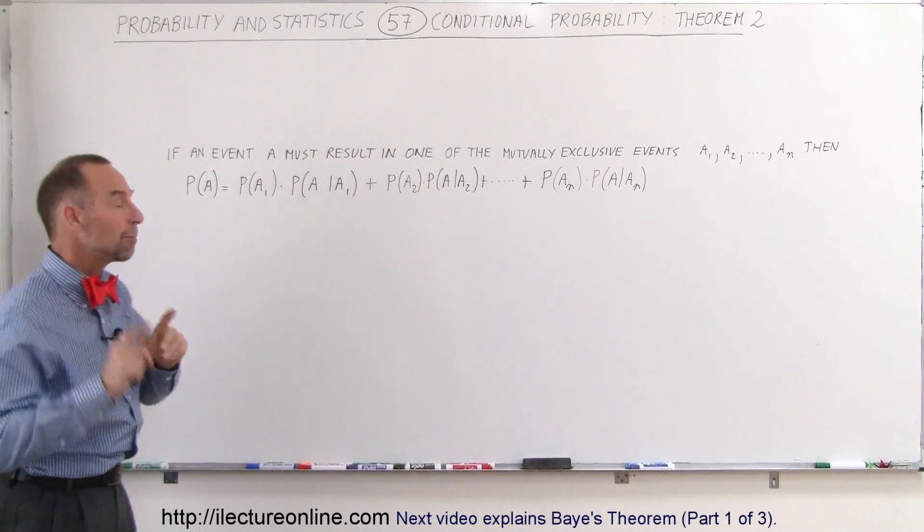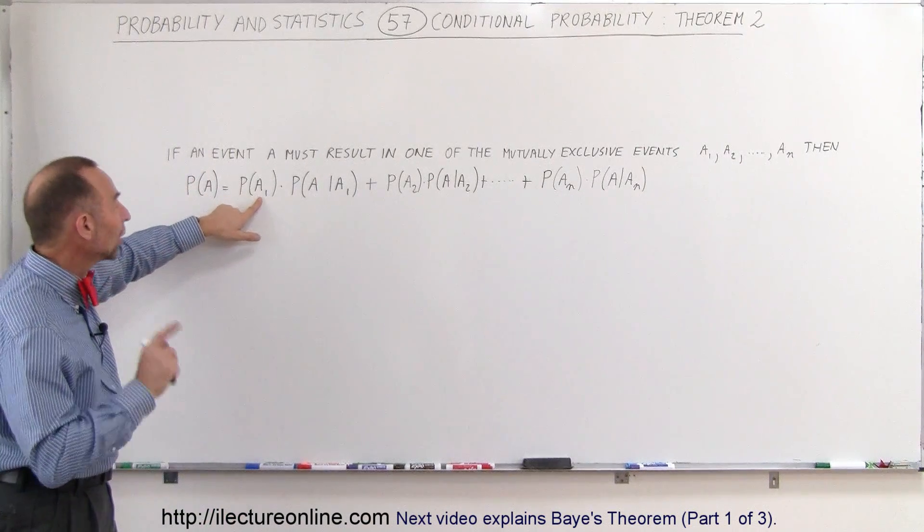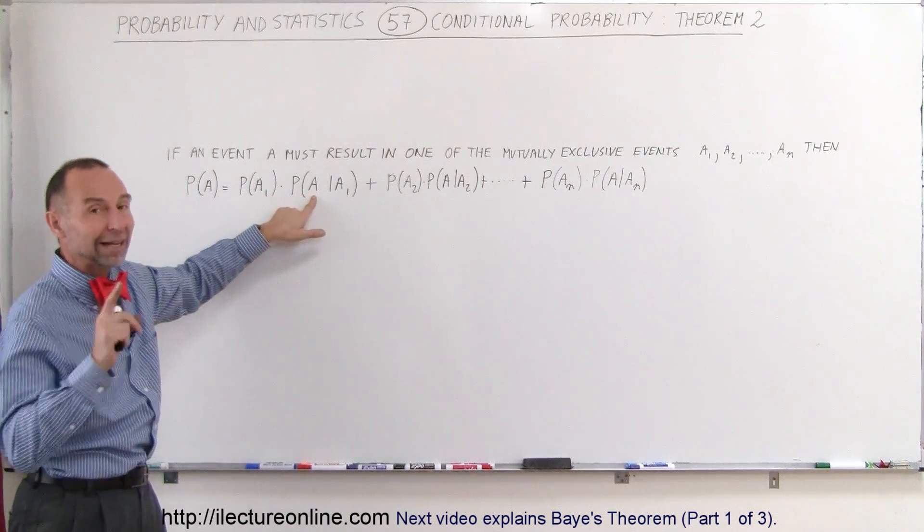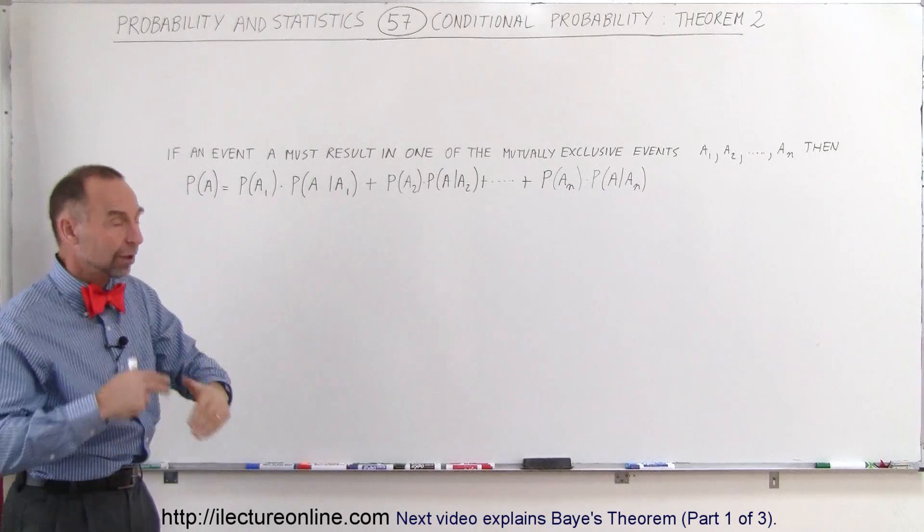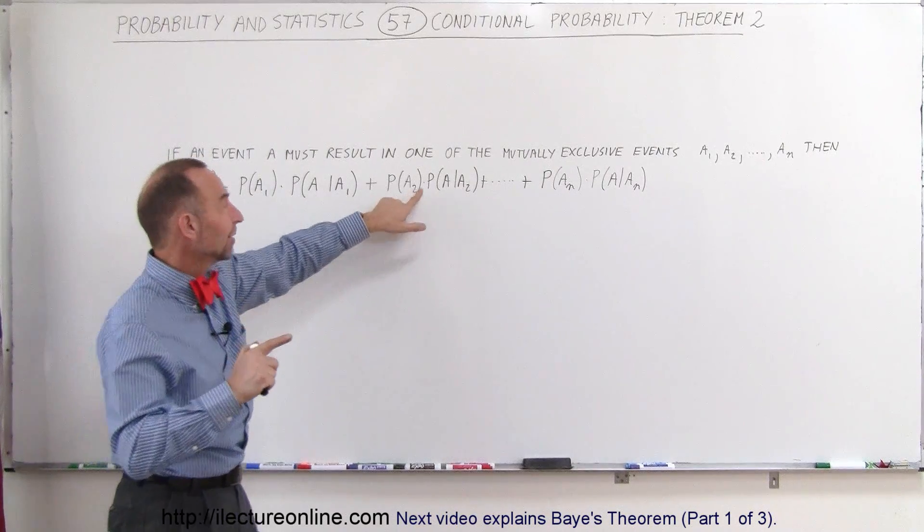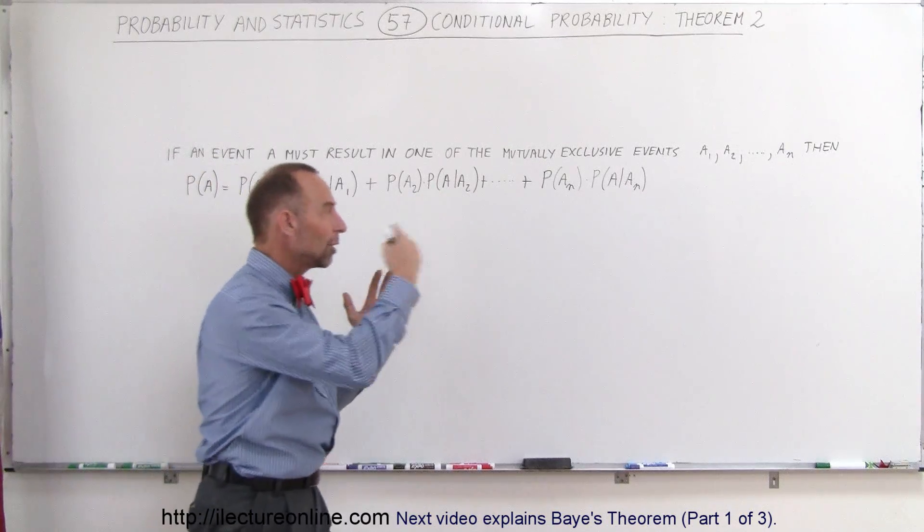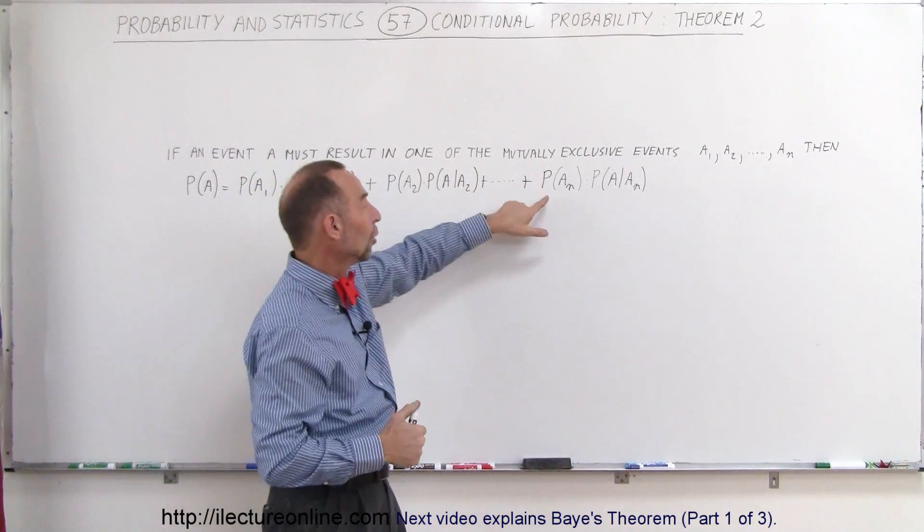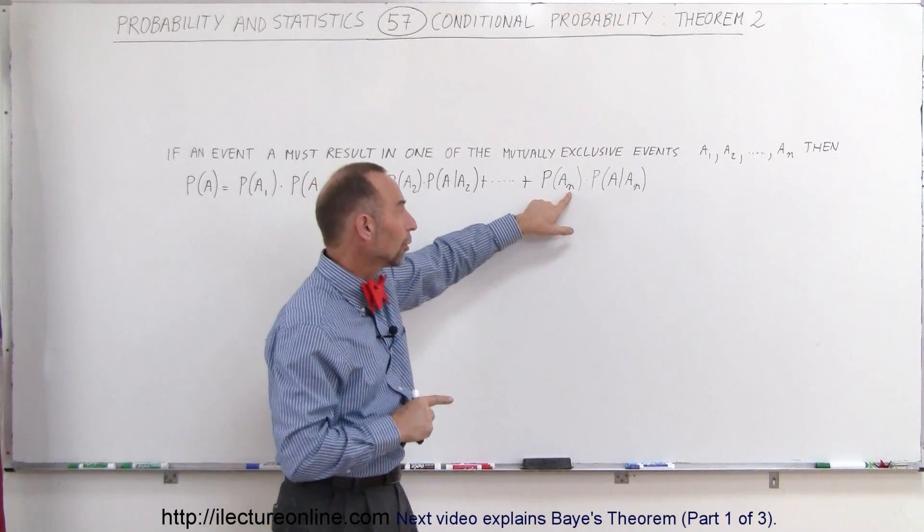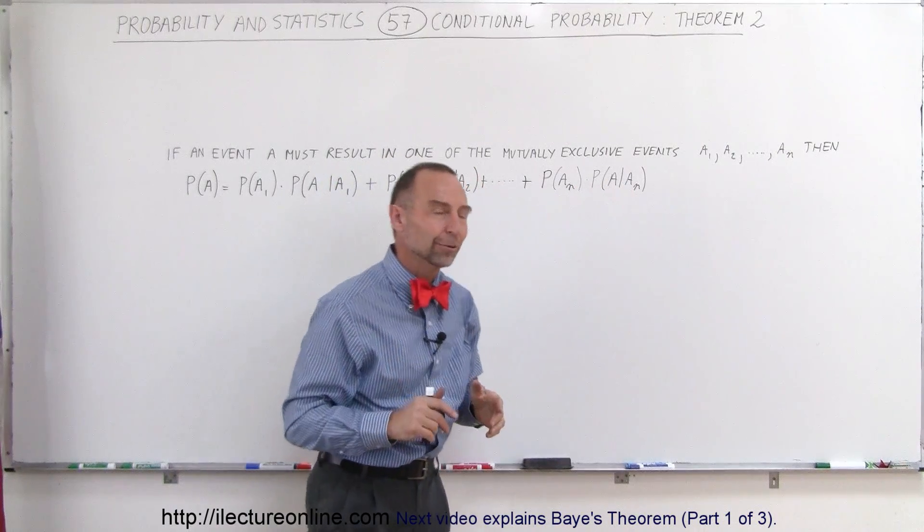Then we can say that the probability of A occurring is equal to the probability of A1 occurring times the probability that A will occur provided that A1 has occurred, plus the probability that A2 occurs times the probability that A will occur provided A2 has occurred, and so on and so forth all the way to the very end where the probability of the last event, An, will occur times the probability that A will occur provided that A sub N has occurred.